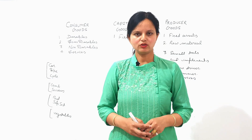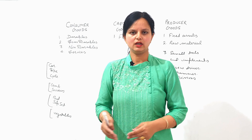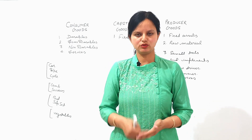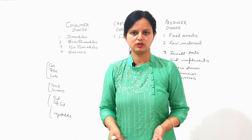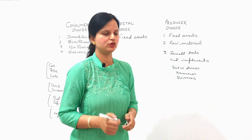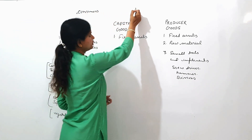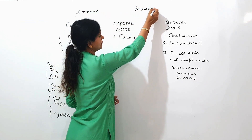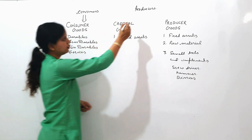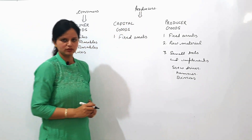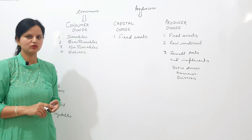Dear students, we cannot classify that certain goods are always consumer good, certain goods are always producer good, and certain goods are always capital good. The same good may be a capital good, consumer good, or producer good — it depends on the end user. There are two end users: consumer and producer. Consumer purchases consumer goods and producer purchases capital good and producer goods.